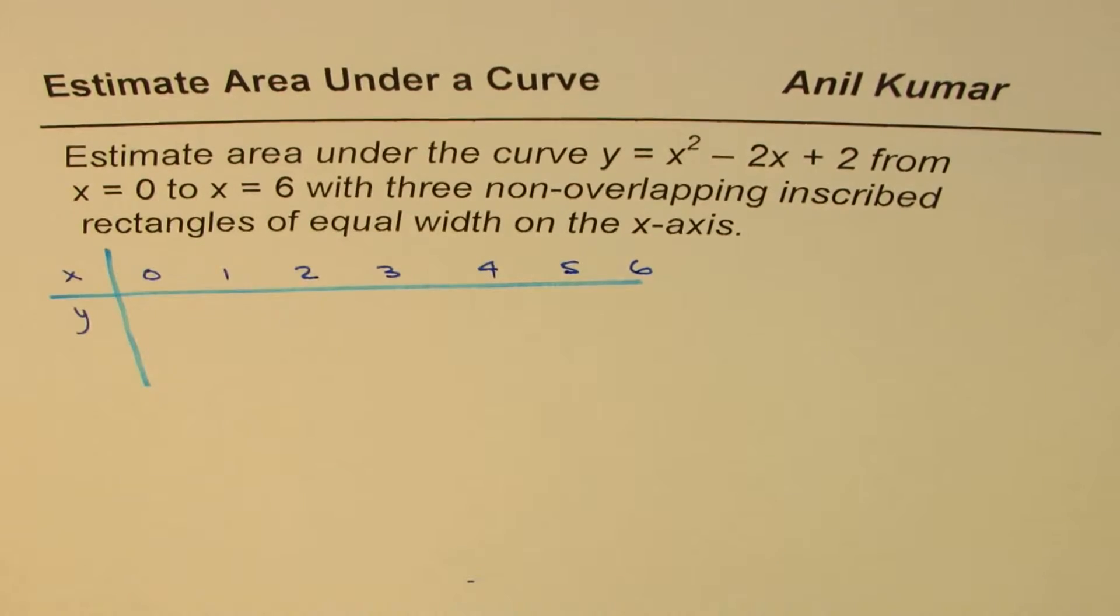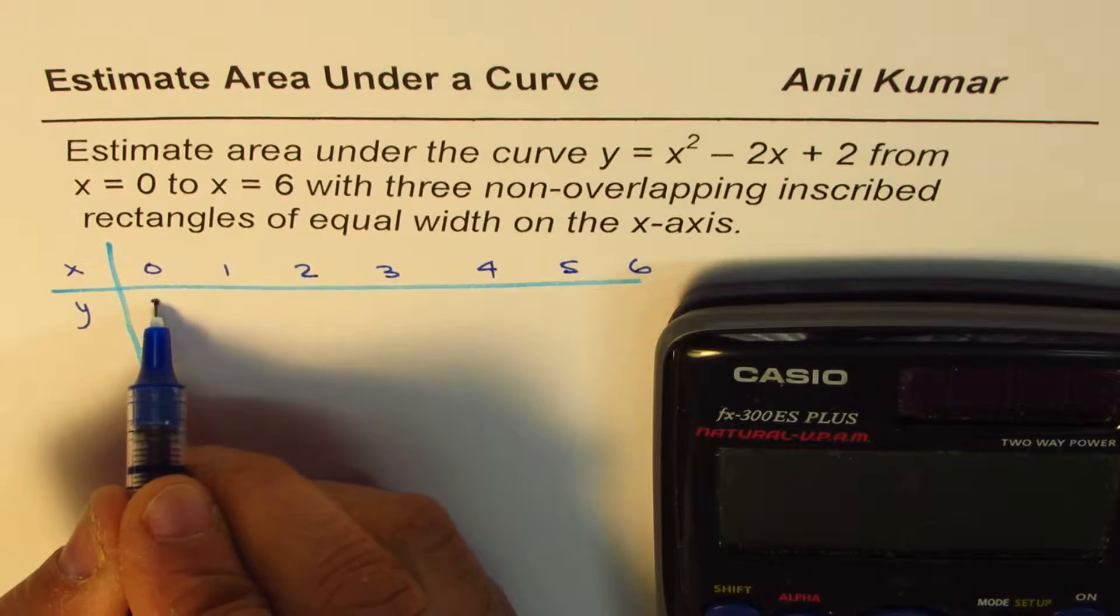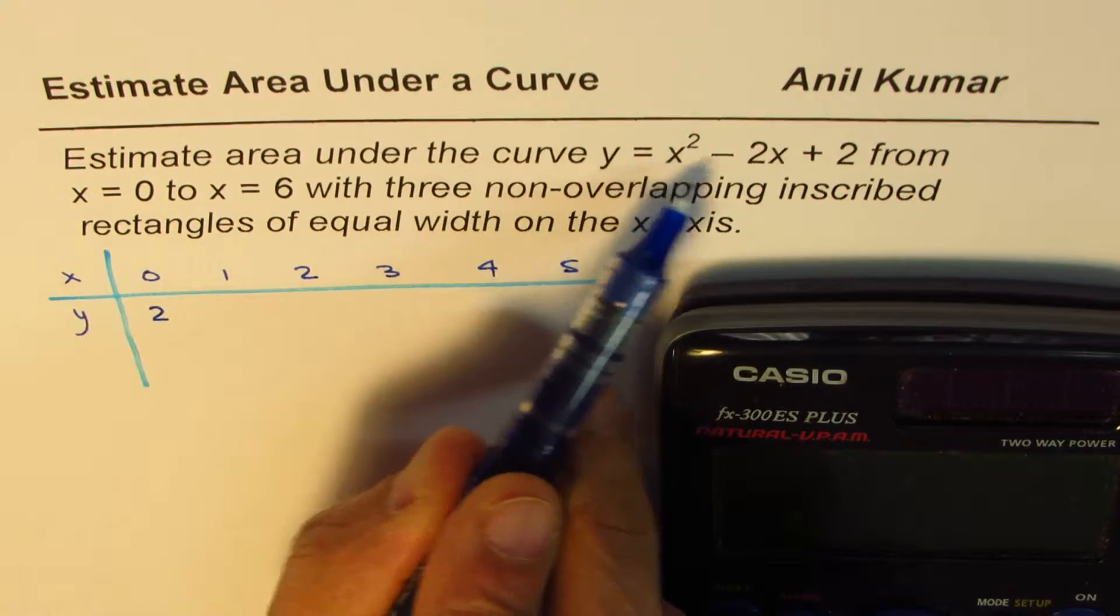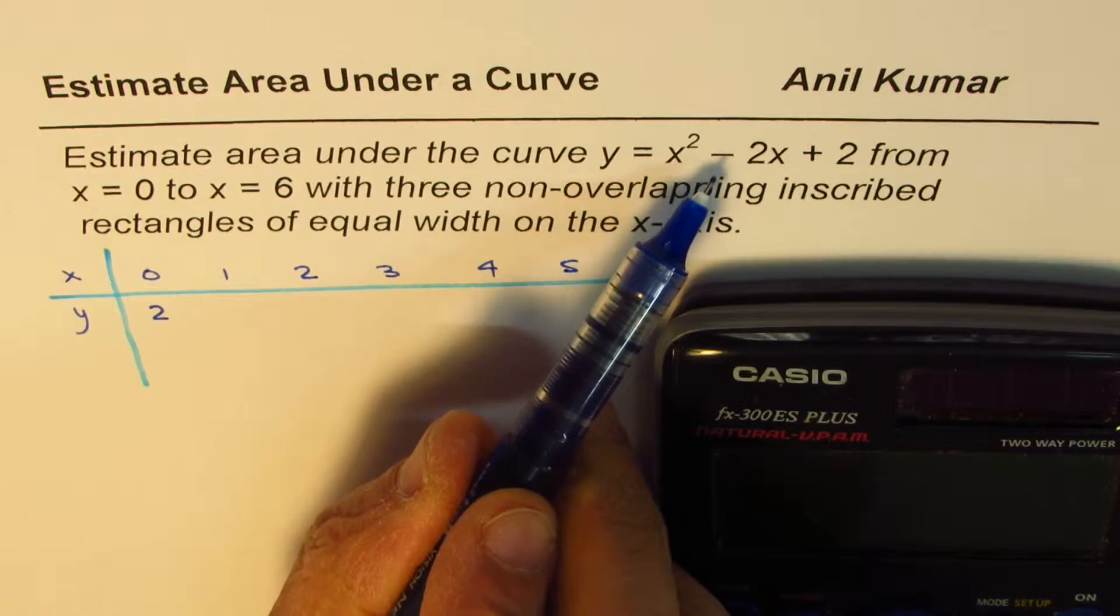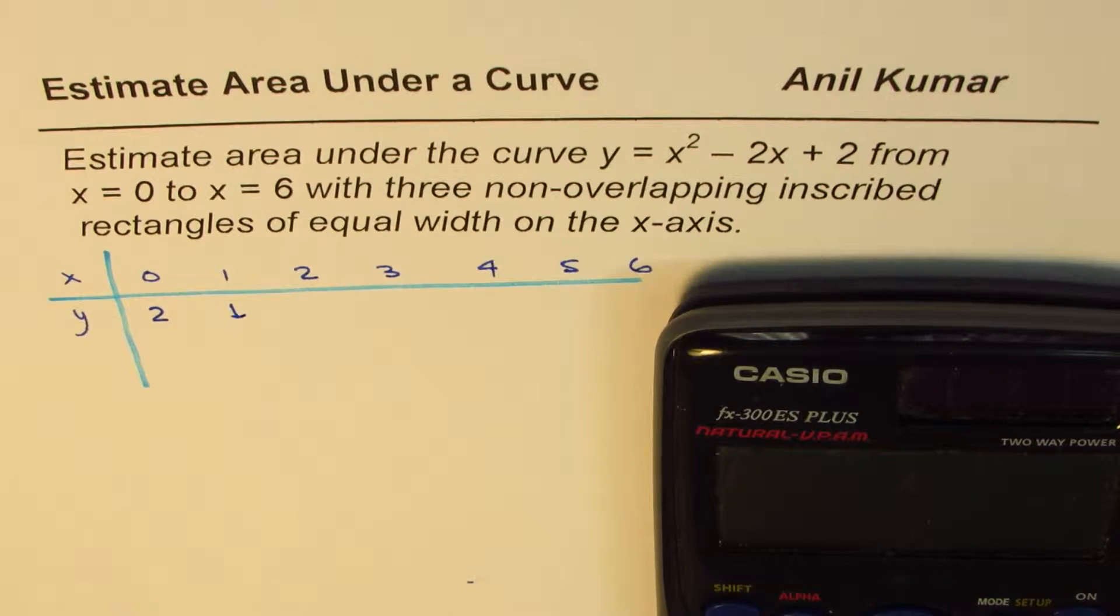If I substitute the value 0 in my equation, I get 2. If I substitute 1, I get 1 minus 2 plus 2, which is 1. Let me use calculator now onwards.